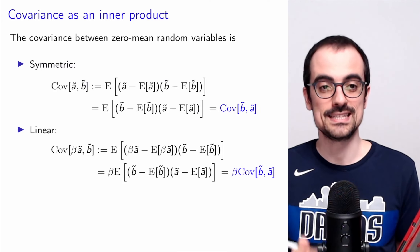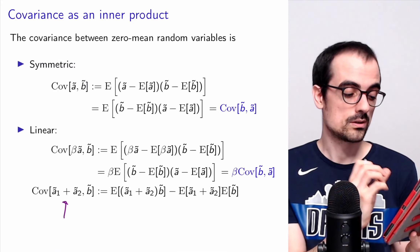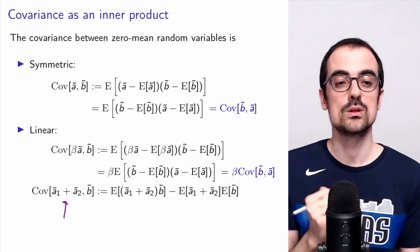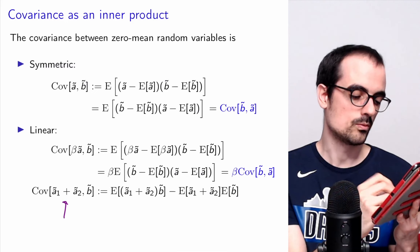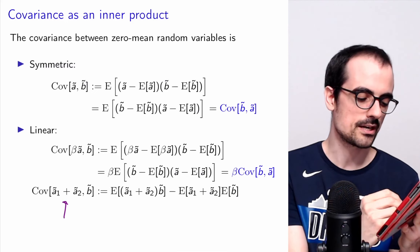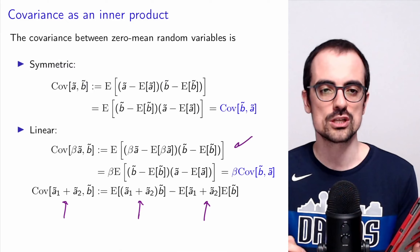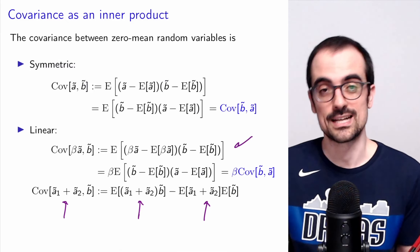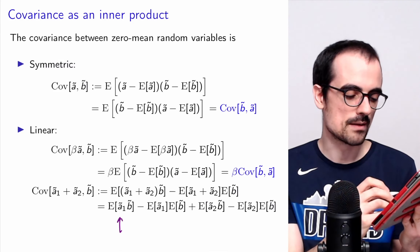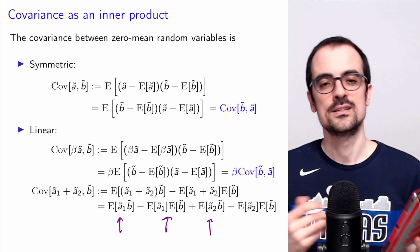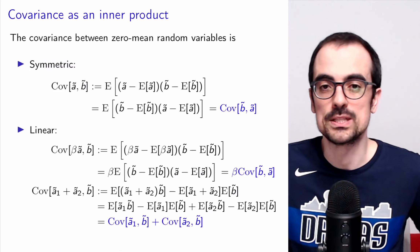We still need to check that the covariance of the sum of two random variables with a third equals the sum of covariances. Using the definition of covariance as the mean of products minus the product of means, we can expand by linearity of expectation into the mean of the product of A1 and B minus the product of their means, plus the mean of the product of A2 and B minus the product of their means. So indeed this equals the sum of the two covariances.